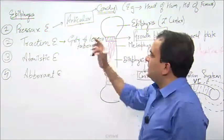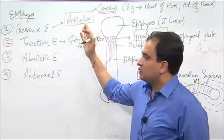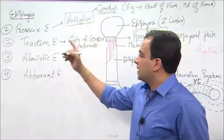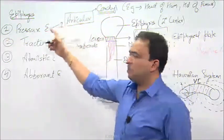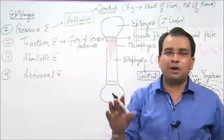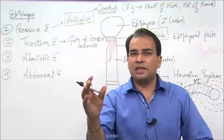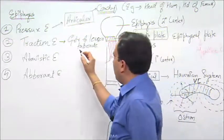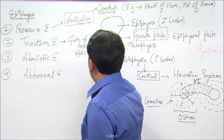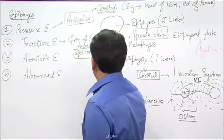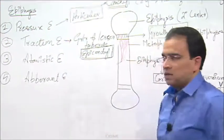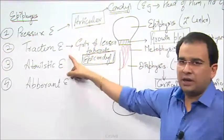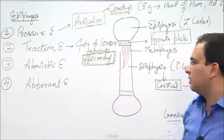Pressure epiphysis are articular, so traction epiphysis are definitely non-articular. You will never see a traction epiphysis making a joint. Secondly, the word 'condyle' is used for pressure epiphysis, but epicondyles — all the epicondyles — none of them in the body are articular. They are just simple projections from where either a muscle is originating or inserting. So whenever you hear the word 'epicondyle,' it has to be traction epiphysis. These are the key words: condyle, epicondyle, articular, non-articular — this will help you get to your answer.